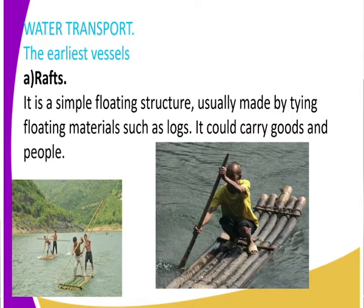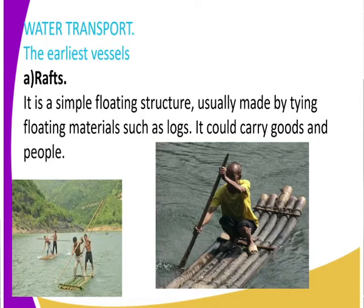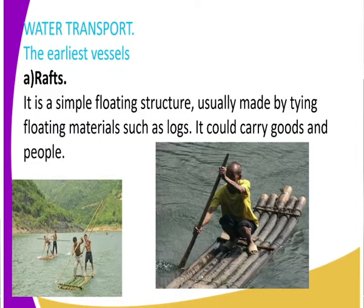A raft is a floating structure. It was made by tying floating materials — for example, logs. You could tie five or ten logs together with a rope. As we always know, logs float on water — that is what we call a raft. A raft could carry goods and people. From our image there, you can see people using rafts. They have tied logs of wood, around five or ten, and they throw them on water. Since logs always float, they could then pedal the rafts using the waves to move from point A to B on water.